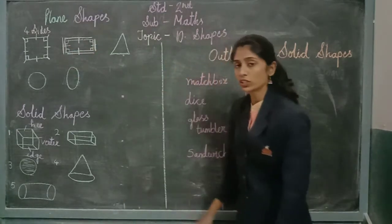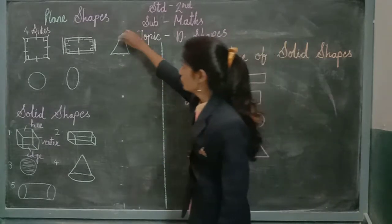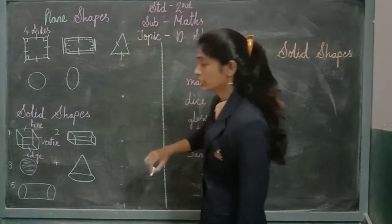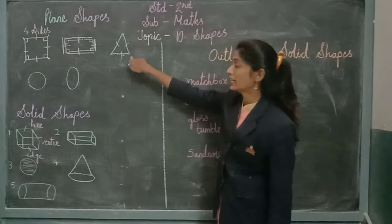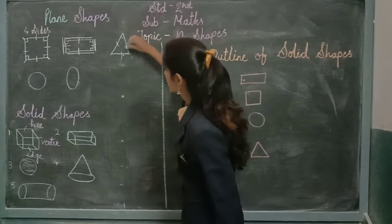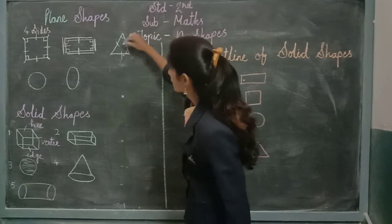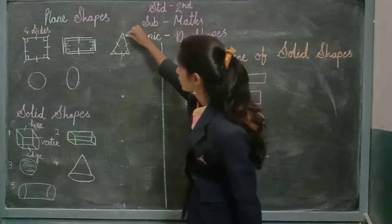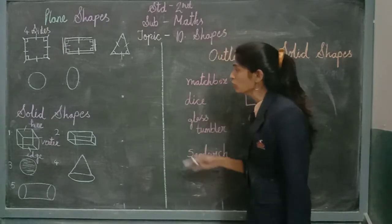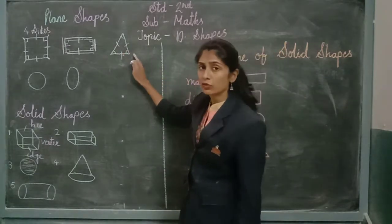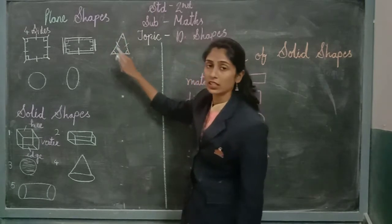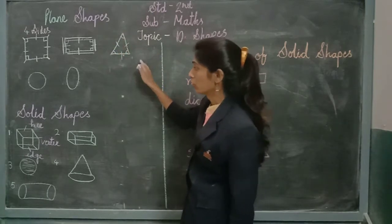Now when we are talking about a triangle — how many sides do we have? 1, 2, and 3. A triangle has 3 sides. How many vertices? A triangle has 3 vertices — 1, 2, and 3. And all 3 sides are equal to each other.